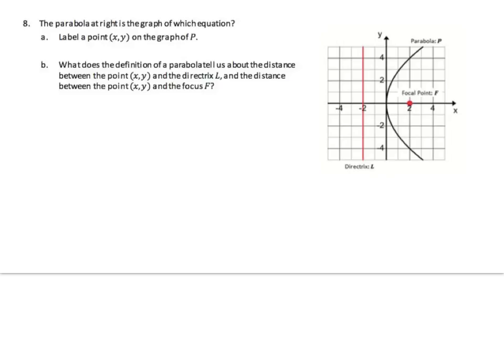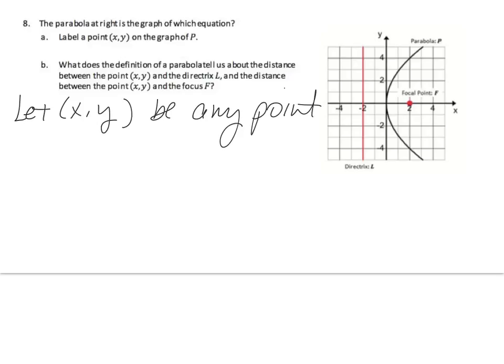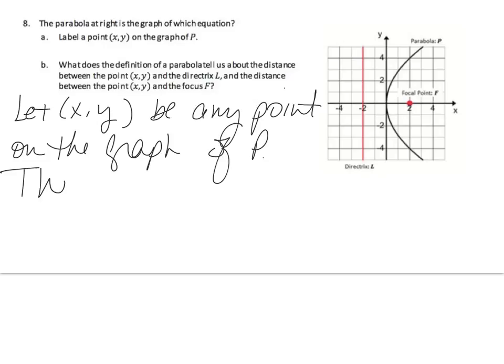The parabola at right — what equation does it represent? The definition of a parabola tells us about the distance between a point (x, y) and the directrix L, and the distance between (x, y) and the focus F. Let (x, y) be any point on the graph of P. By definition, these distances are equal.